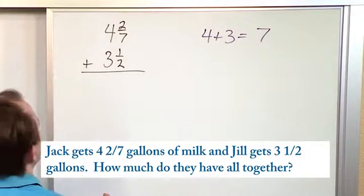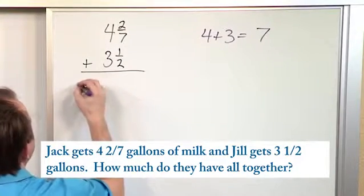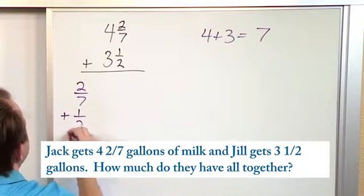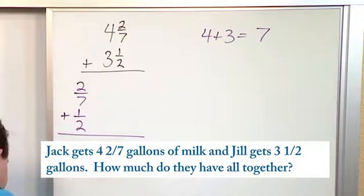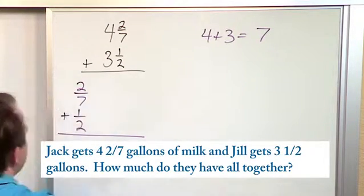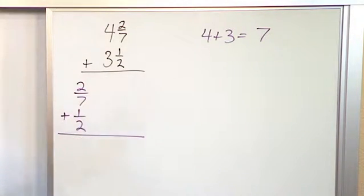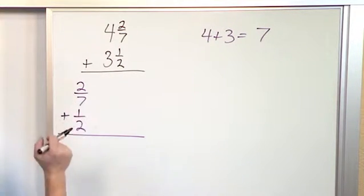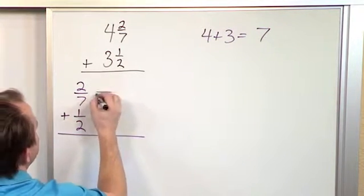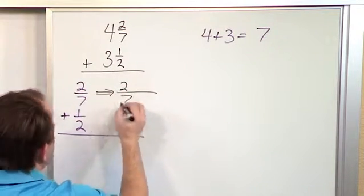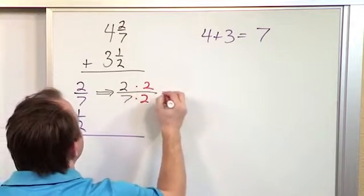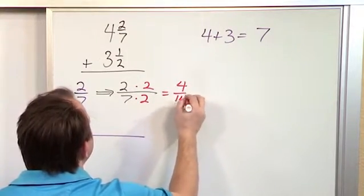Now we need to add the fractions together. So here what we're going to do is we have two-sevenths and we're adding to that one-half. Now we need a common denominator. We don't have a common denominator. We look at seven and two. Immediately 14 pops in my head. That's the smallest thing I can think of that both of these will divide into. And so basically I take the two-sevenths. How would I transform that to 14 on the bottom? Multiply by two. Multiply by two. I will get four over fourteen.